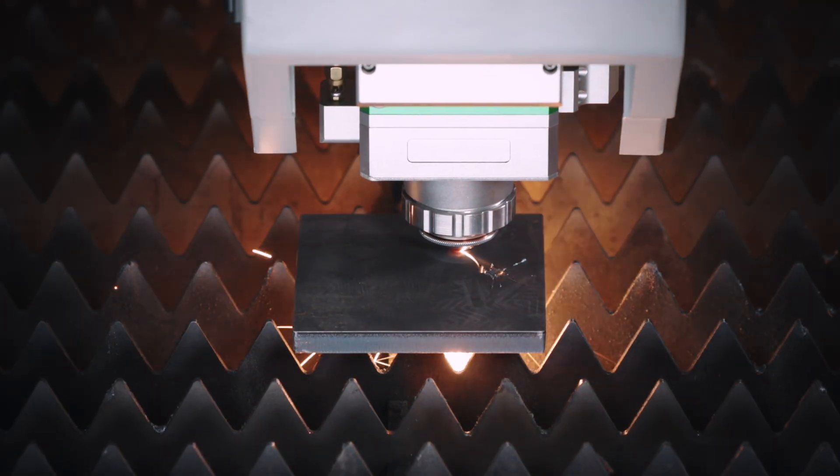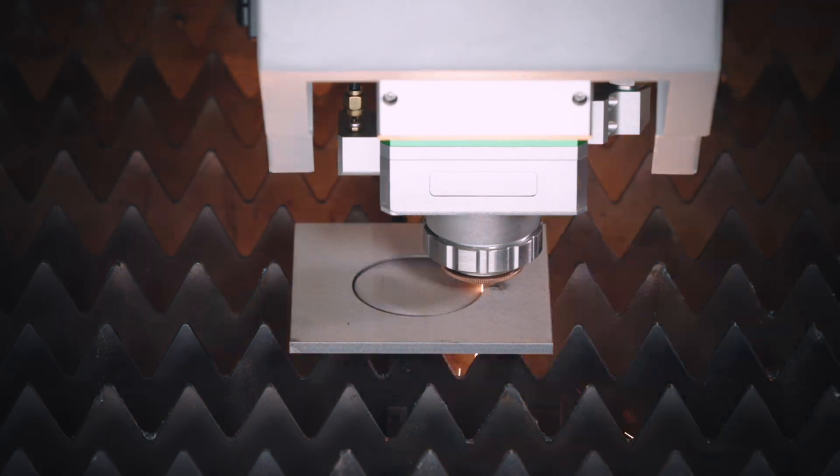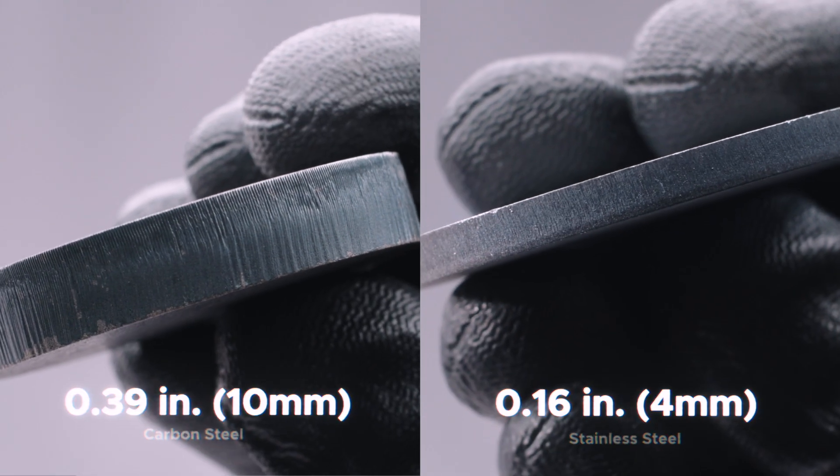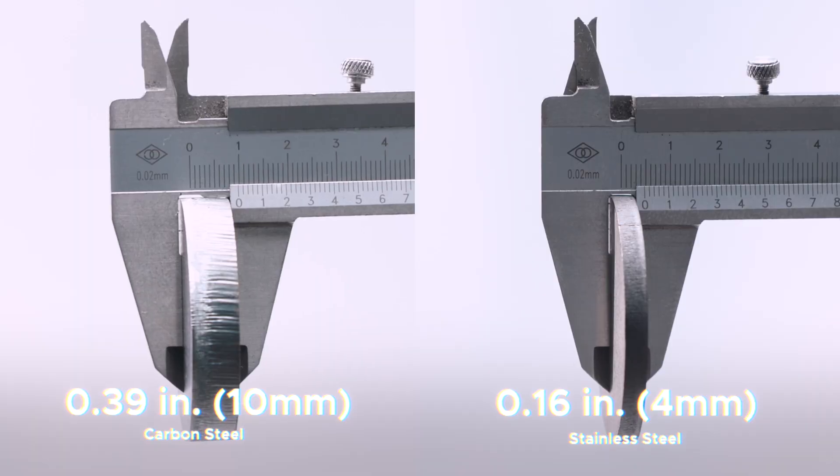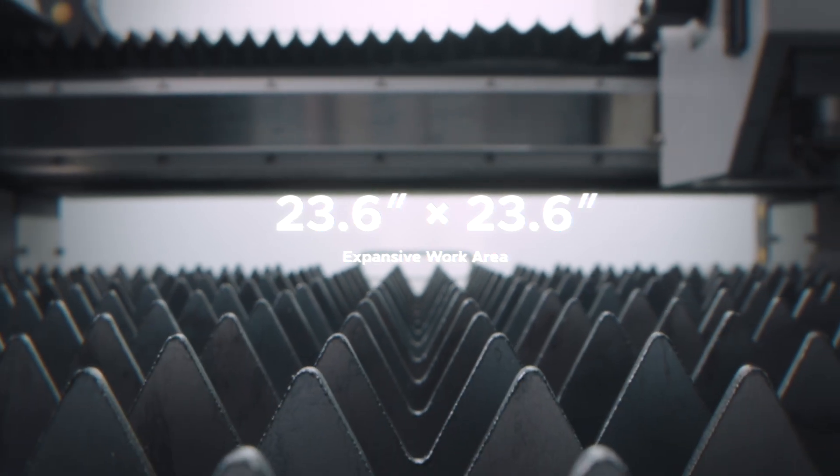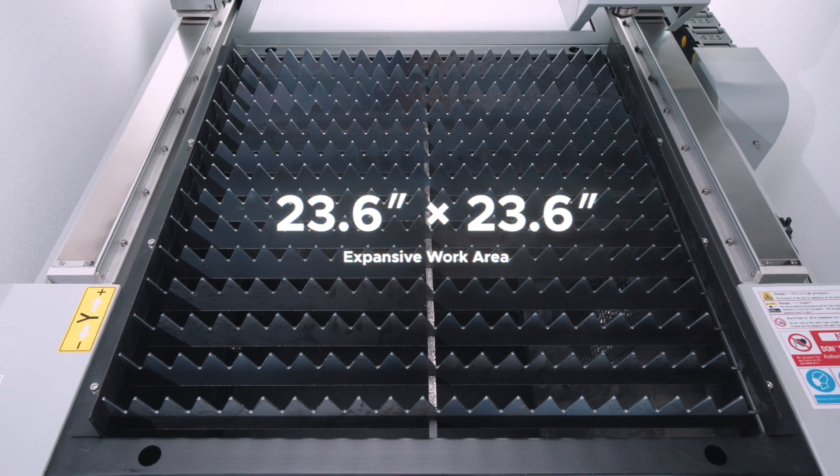Our powerful 1500 watt laser easily handles a wide range of metals. It cuts through stainless steel up to 0.16 inches and carbon steel up to 0.39 inches with a 23.6 inch by 23.6 inch work area that is 50% larger than most, you can tackle more demanding projects.